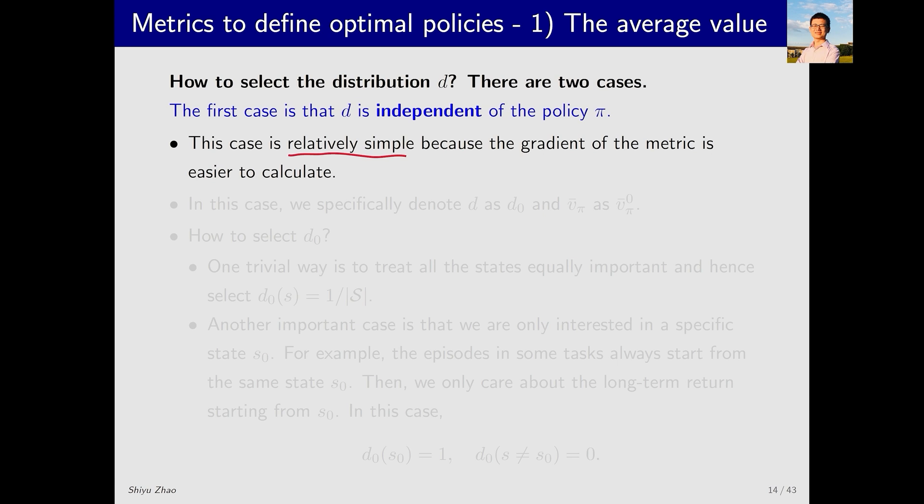Why is this relatively simple? It's because v̄π equals the vector form d^T vπ, as we said earlier. If d and π are independent, then when we compute the gradient, d will not be involved. So we only need to compute the gradient of vπ. However, if d depends on π, then when computing the gradient, we also need to compute the gradient of d with respect to π. This makes the process more complicated, as you will see later. To indicate that d is independent of π, we'll write it as d₀, and the corresponding v̄π will be written as v̄π₀.